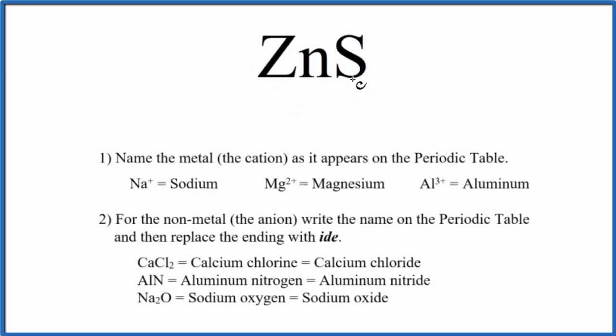To write the name for ZnS, we first need to recognize we have a metal and a nonmetal. So we're going to name this as an ionic compound, specifically because there's two different elements. It's called a binary ionic compound, and we'll use these rules here.